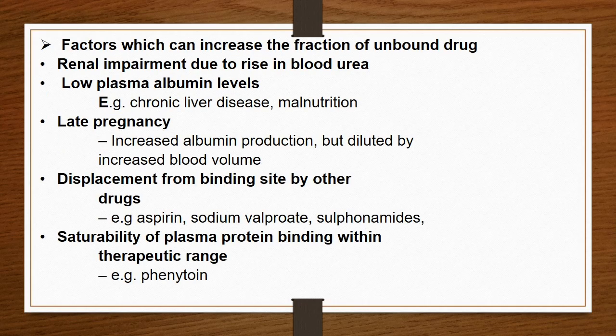My final question is: what are the factors which can increase the fraction of unbound drug? These include renal impairment due to a rise in blood urea; low plasma albumin levels in chronic liver disease and malnutrition; late pregnancy with increased albumin production but diluted by increased blood volume; displacement from a binding site by other drugs such as aspirin, sodium valproate, and sulfonamides; and saturability of plasma protein binding within the therapeutic range, for example phenytoin.